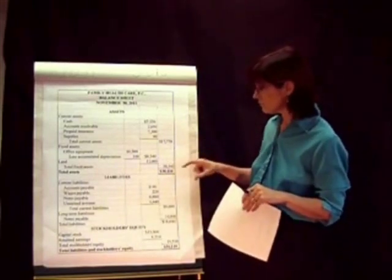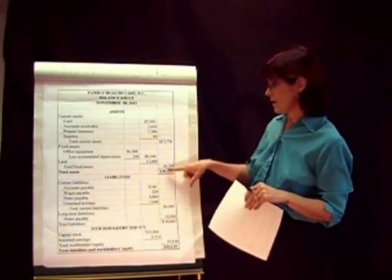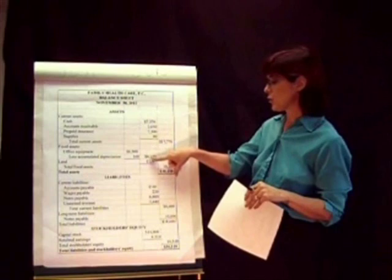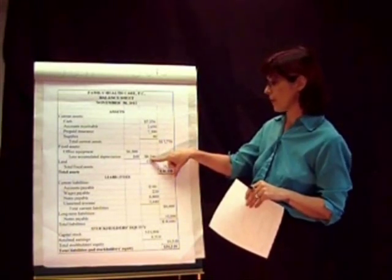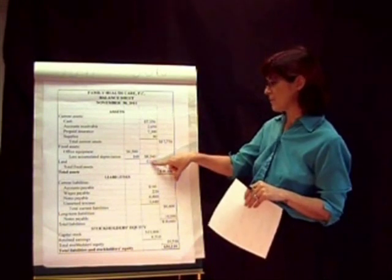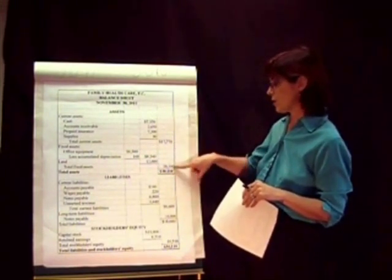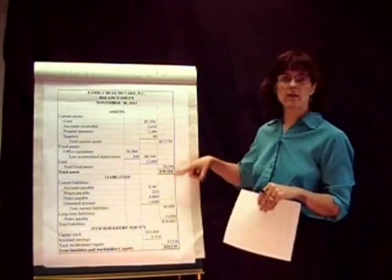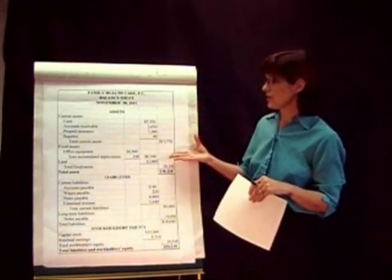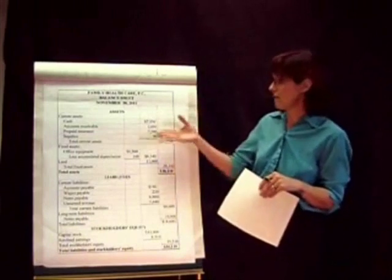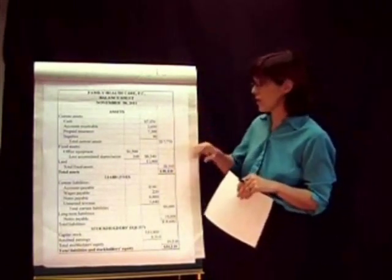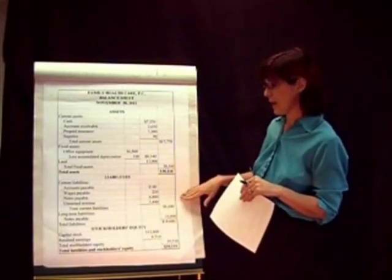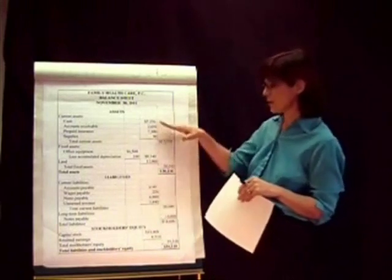We total to get our fixed assets: office equipment minus accumulated depreciation gives us net fixed assets, plus land gives us total fixed assets. Then we add that to our current assets to give us total assets of $38,110. Someone looking at the statements who wants to lend us money can see what we have to pay bills back with. Banks are very interested in whether we have enough current assets to pay our current liabilities.